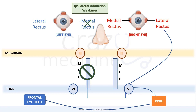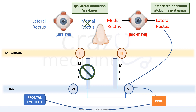But the right-sided lateral rectus is functional, so the patient will be able to look right with the help of the right eye. Also, there will be dissociated horizontal abduction nystagmus in the right eye. This is because of an adaptive increase in innervation of the weak adductor — there is a proportionate increase in innervation through the strong abductor, which is manifest as nystagmus in the right eye.